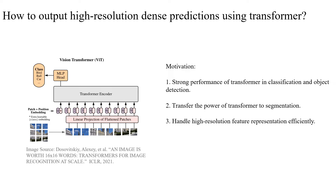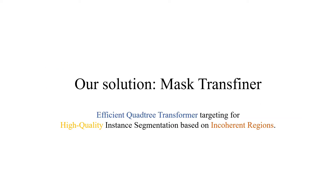In the meanwhile, high-quality instance segmentation requires high-resolution features. So we also study how to utilize the power of Transformer for high-resolution dense predictions while keeping computation efficiency. We propose Mask Transfiner, an efficient quadtree Transformer targeting high-quality instance segmentation based on incoherent regions.